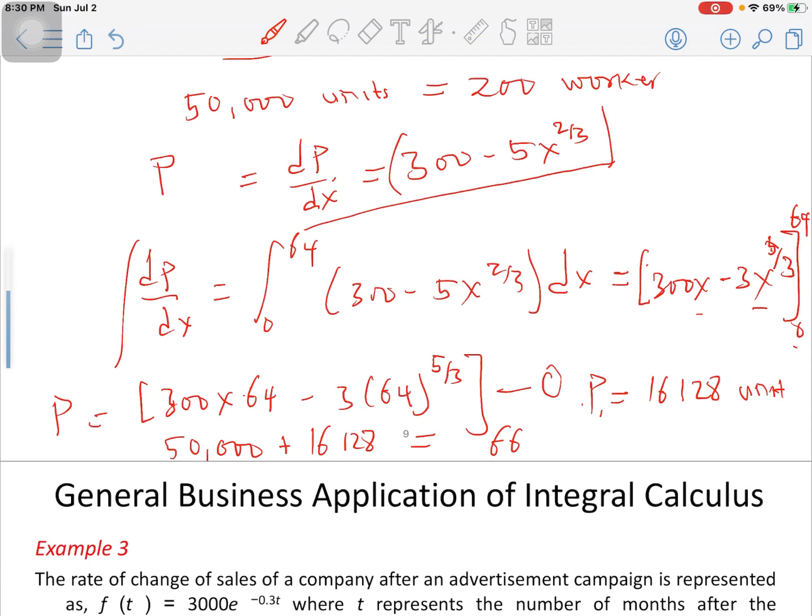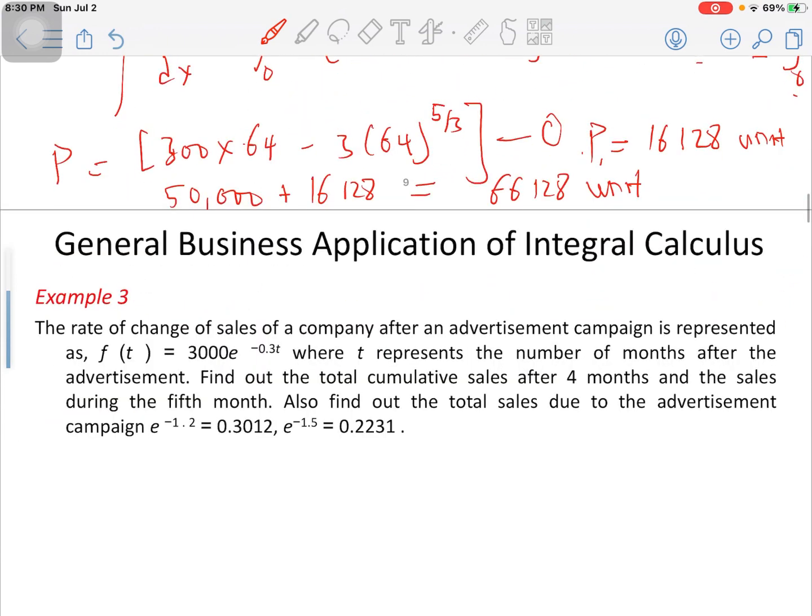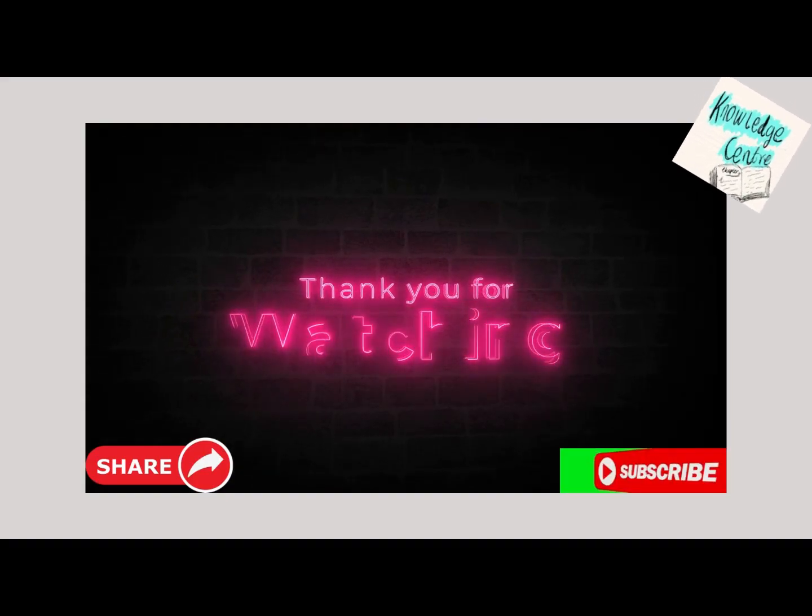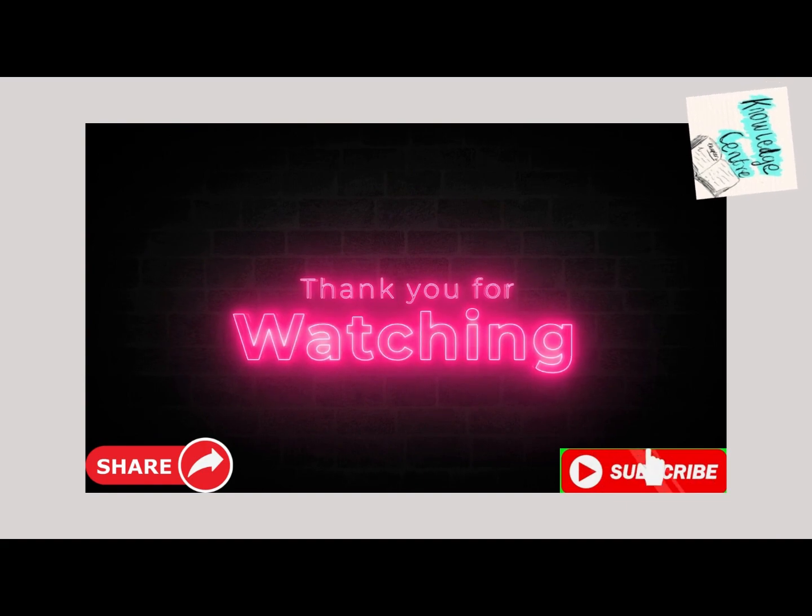We are going to get about 66,128 units. So in total, these 264 workers can increase the production level up to 66,128. That's the whole about the question. Thank you for watching, and I'll see you in my next video.